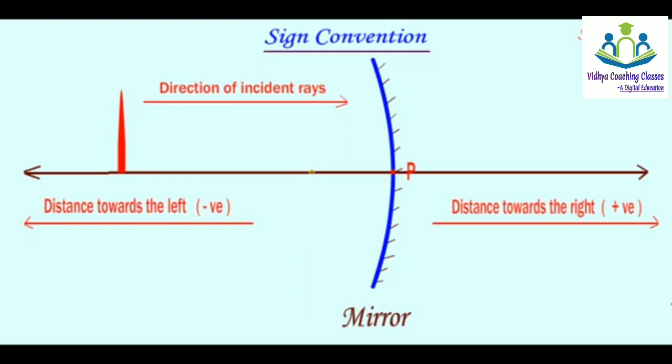If we take the distance towards the left, it will always count as negative. If we take the distance from pole to 5 km, it will be minus 5.